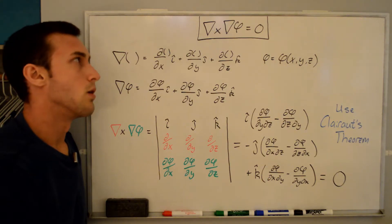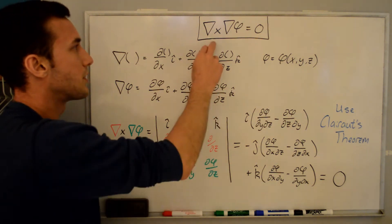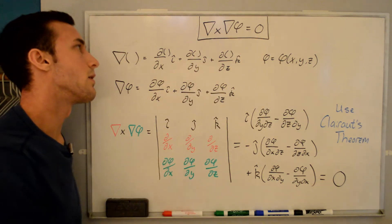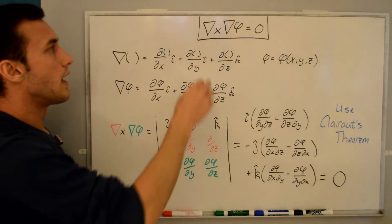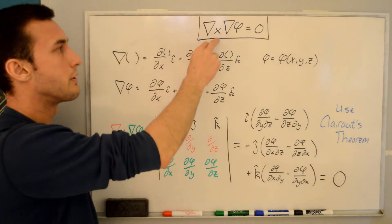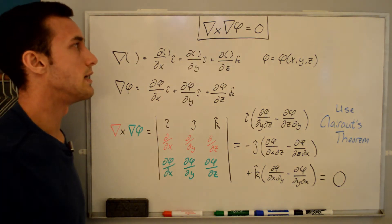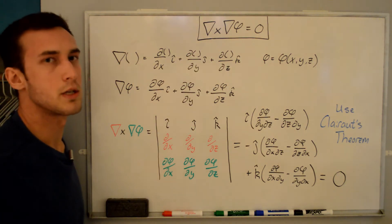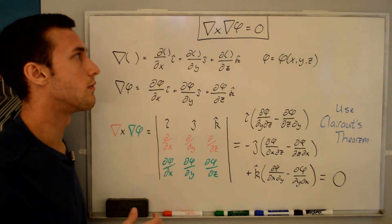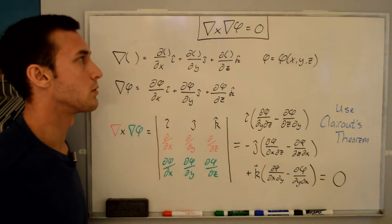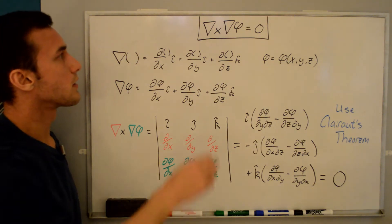Hey everyone. In this video I'm going to go through the proof behind the statement that the del operator crossed with the gradient of a scalar is equal to zero, or the curl of the gradient of a scalar is equal to zero — either way you want to say it is fine.